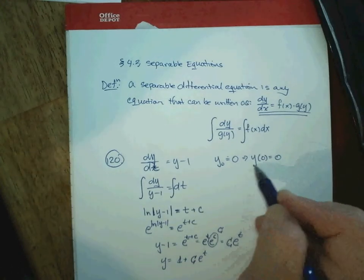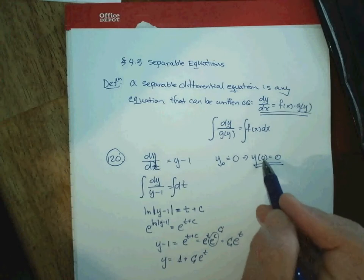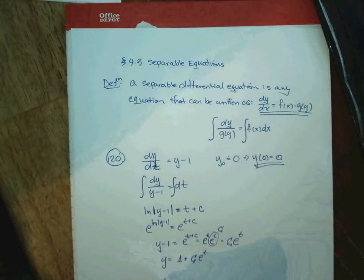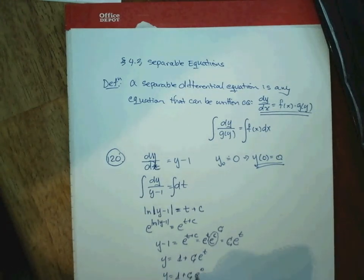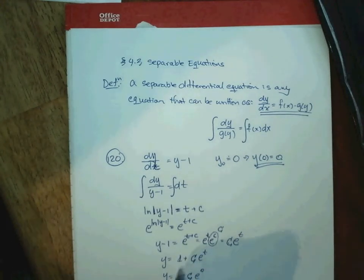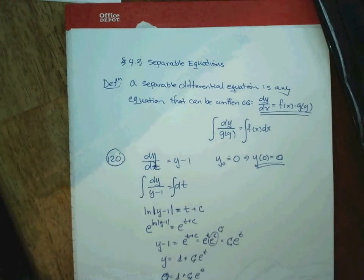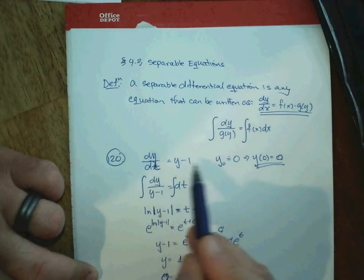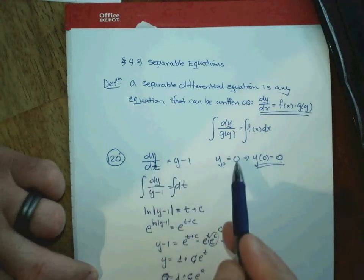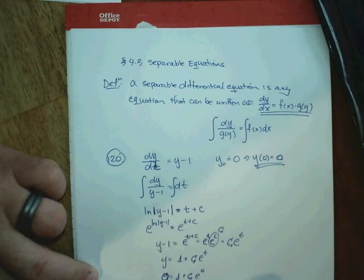Now we apply the initial condition: when t = 0, y = 0. Plugging in t = 0: e^0 = 1, so y = C·1 + 1 = C + 1. Since y must equal 0, we get 0 = 1 + C, meaning C = −1. Therefore, the solution to this differential equation with the initial condition is y = 1 − e^t.